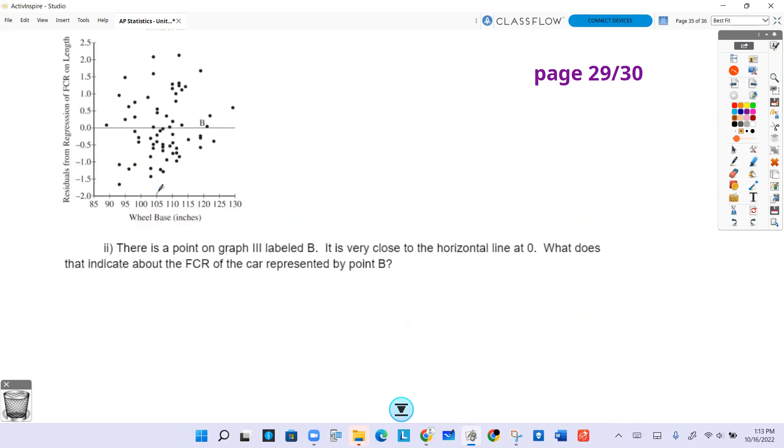Part C, or part two of that problem. There is a point on graph three labeled B, right there. The question says it is very close to the horizontal line at 0. What does that indicate about the FCR of the car represented by point B?